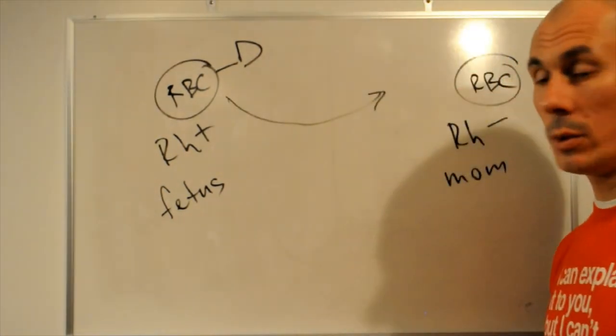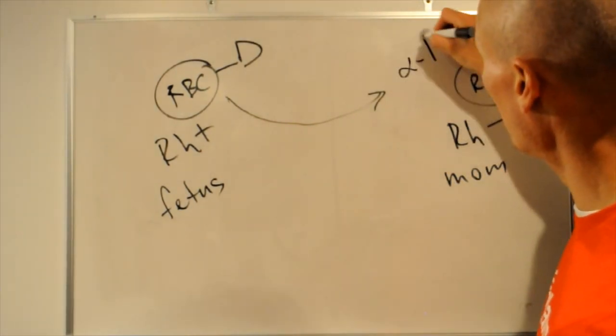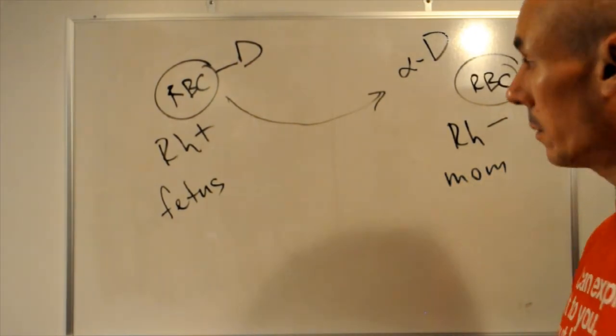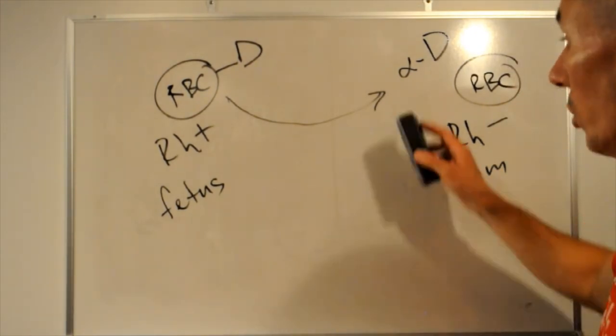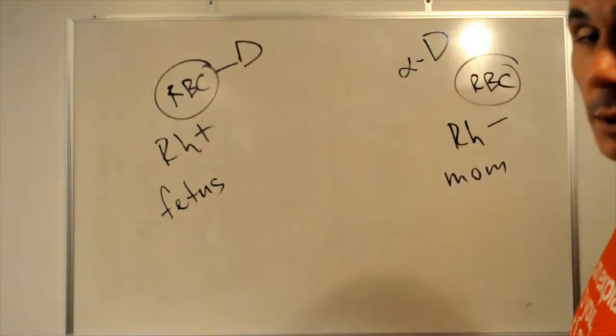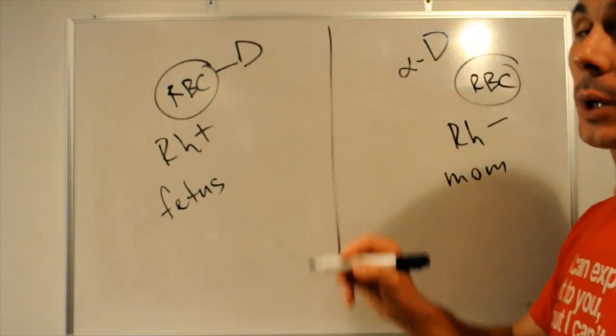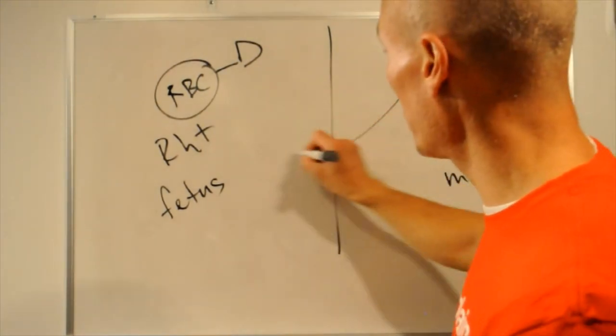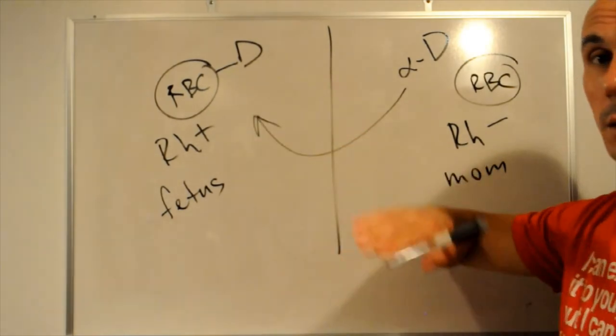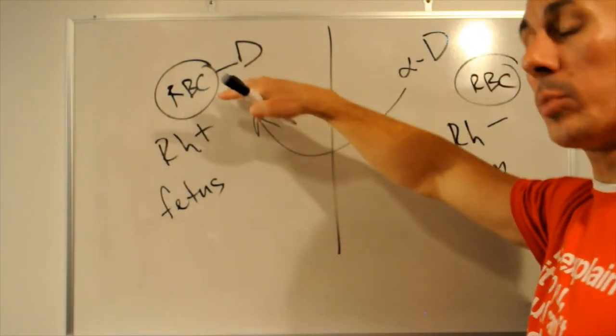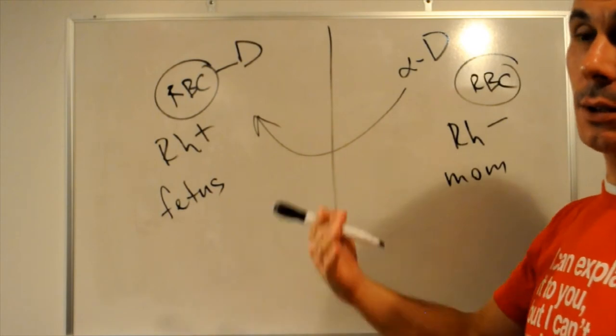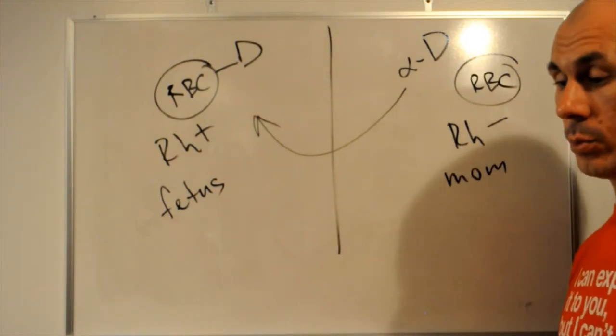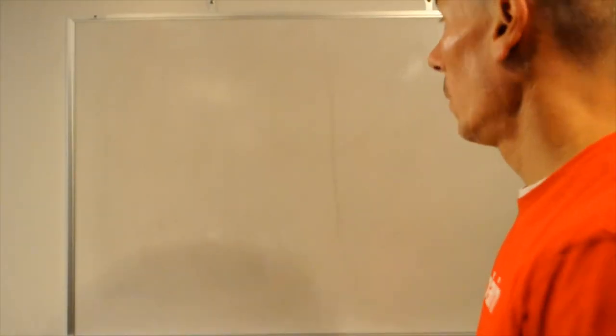And mother's immune system produces anti-D antibodies. And they stay in the mother's circulation for a long time. And then, during second pregnancy, this anti-D antibody can cross placenta and attack the D antigen, the red blood cells, of a second fetus. And this is called a hemolytic disease of newborns.